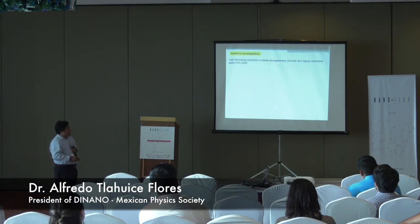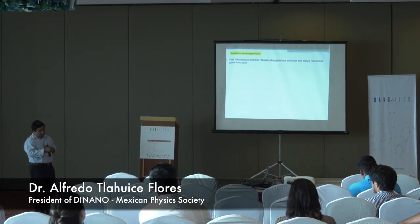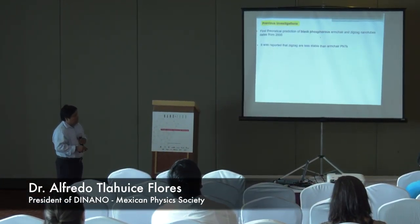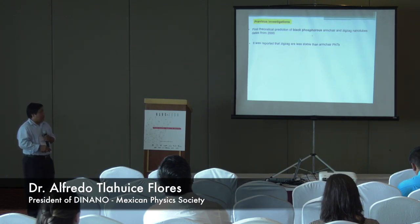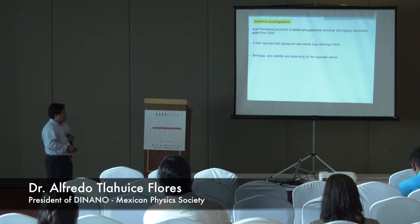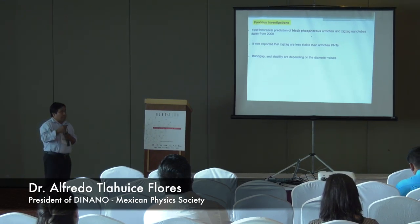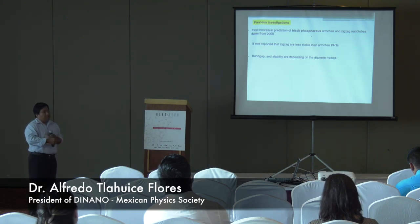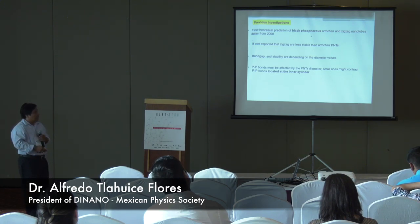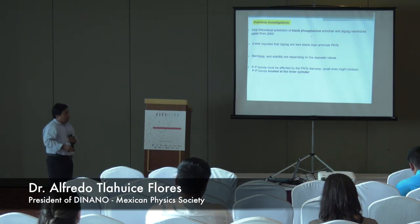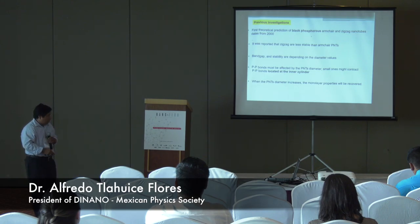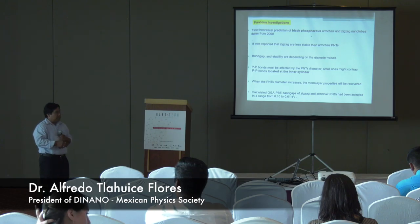I'm going to review just the previous investigations. In 2000, the first paper appeared related to armchair and zigzag nanotubes. And recently in 2014, it was reported that the zigzag nanotubes are less stable than the armchair PNTs. The band gap and stability are dependent on the diameter values. So it's not difficult to think that if we increase the diameter of the nanotubes, we recover the structure of the monolayer. We can think that the monolayer is a nanotube with an infinite diameter. So properties must be affected by the PNT diameters.